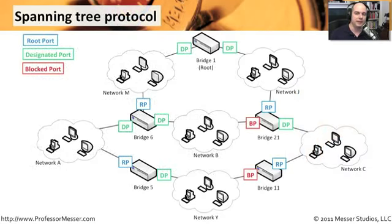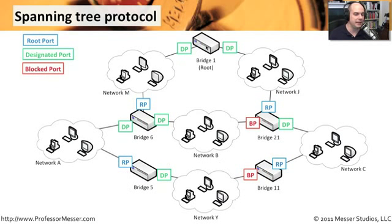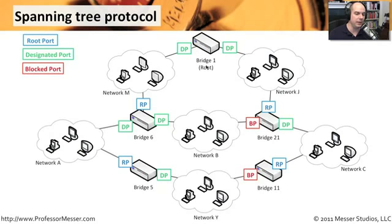One key aspect of the spanning tree protocol is that all of your bridges or switches on your network can all talk to each other, and most of the time that's exactly how your network is set up — in layer 2 mode, where all devices can see everybody else. There are three types of ports in spanning tree: a root port, which talks back to the root bridge; and one bridge on the network is the root bridge, usually the one with the smallest MAC address or one you designate as the root bridge.